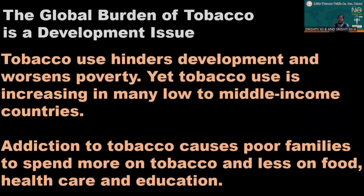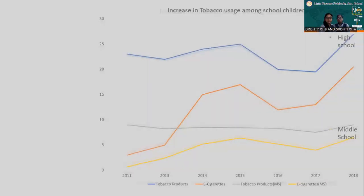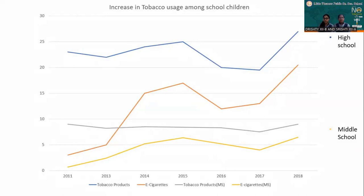Not only does tobacco use cause many personal problems, but it also hinders the development of a country. Tobacco use worsens poverty — particularly in low to middle income countries, addiction to tobacco causes poor families to spend more on tobacco and less on food, healthcare, and education. Looking at the graph, the yellow and gray lines represent the stats of tobacco use amongst middle schoolers, and the blue and red lines show the stats amongst high schoolers. The increase in tobacco use among high schoolers is significantly higher than that of middle schoolers, indicating that adolescents are much more vulnerable to tobacco use.